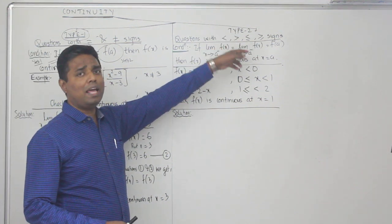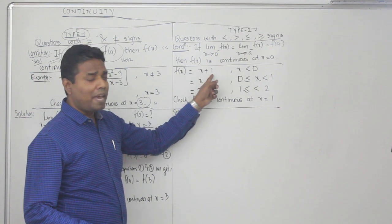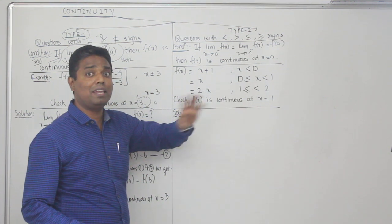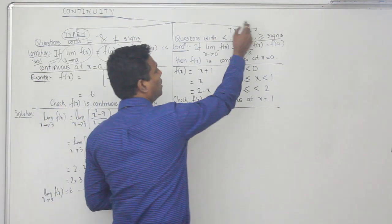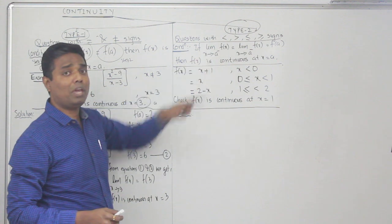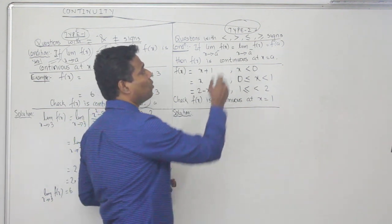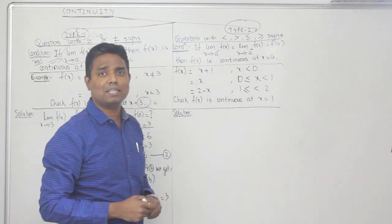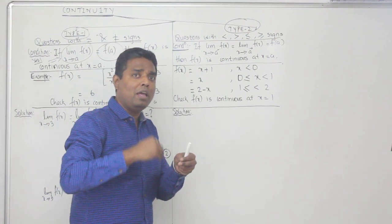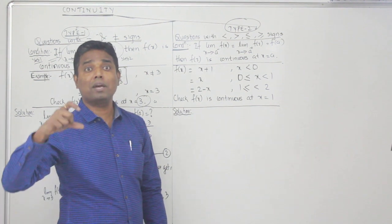Now for Type 2, the question will have less than, greater than, less than or equal to, or greater than or equal to signs — inequality signs. The condition for Type 2 is three steps: limit x→a⁻ f(x) [left-hand limit, meaning x is less than a] must equal limit x→a⁺ f(x) [right-hand limit, x greater than a], and both must equal f(a).